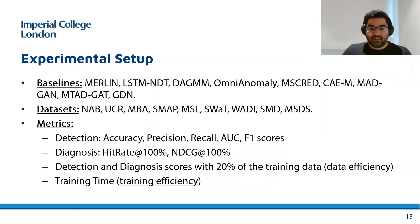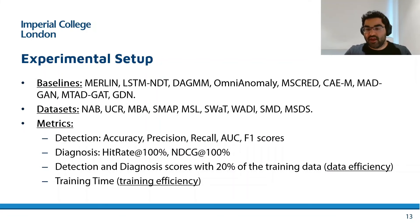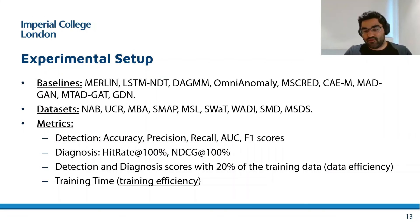In terms of metrics, for detection we use accuracy, precision, recall, area under the ROC curve, and F1 scores. For diagnosis, we use hit rate and normalized discounted cumulative gain. We also generate these numbers when we give only 20% of the training data to measure how data-efficient each model is, and we compare training time to measure training efficiency.